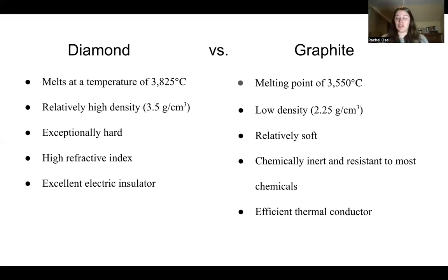Graphite, on the other hand, is relatively soft. It still possesses these strong carbon-covalent bonds. However, it also exists in sheets that have some pretty weak van der Waals forces exhibited within them. That brings the strength down a little bit. Diamond has a high refractive index, which describes the way light is able to either pass through or reflect off of an object, and it is a great electric insulator. Graphite, on the other hand, is resistant to most chemicals, therefore it's pretty chemically inert, and it is an extremely efficient thermal conductor, meaning it has a great capacity to transfer that heat energy from one place to another.